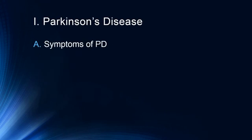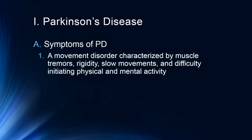We'll start with Parkinson's disease and its symptoms. This is a movement disorder characterized by muscle tremors, rigidity, slow movements, and difficulty initiating physical and mental activity. One of the problems with Parkinson's disease is that the parts of the brain involved — the basal ganglia — work through a series of excitatory and inhibitory connections. So in some instances, Parkinson's patients can't stop moving, giving them tremors, but they also have difficulty initiating movements due to insufficient excitation or too much inhibition.